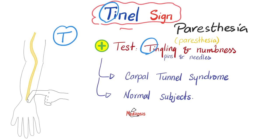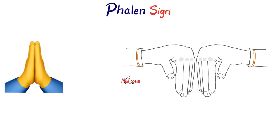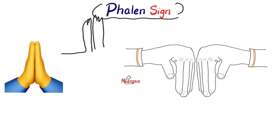Just because the Tinel sign is positive doesn't necessarily mean the patient has carpal tunnel, and a negative test doesn't rule it out. The next physical exam finding is the Phalen sign or Phalen test. You ask the patient to flex the wrist hard. This stretches the median nerve, and if it's already compressed due to carpal tunnel syndrome, the patient will feel tingling and numbness — paresthesia, pins and needles — in the lateral three and a half fingers of the palmar aspect of the hand.